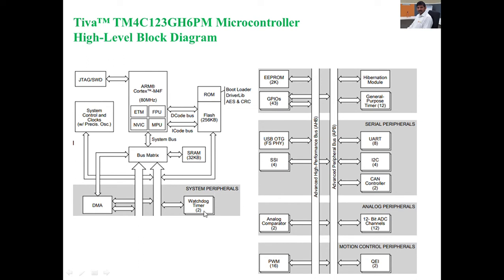On-chip peripherals include two watchdog timers — the watchdog timer continuously monitors the system, and if it is not working, it generates a reset signal. Next is direct memory access (DMA): without CPU involvement, we can transfer data, so the CPU is used for required operations, efficiently utilizing it and avoiding waste of CPU time.